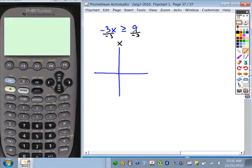That gives us x is, now what happens with inequalities when you multiply or divide by negative? Flip the symbol. It becomes less than or equal to. 9 divided by -3 is -3. So here is your inequality. So we're going to sketch the graph of x equals -3.